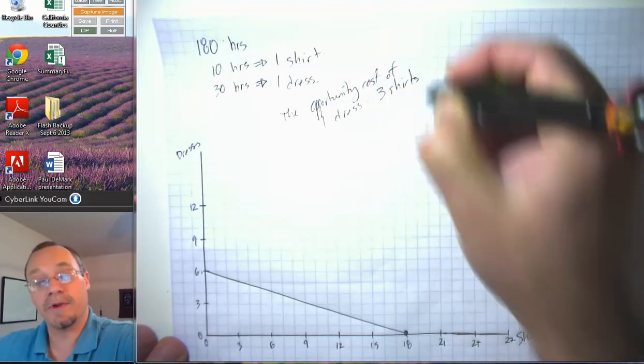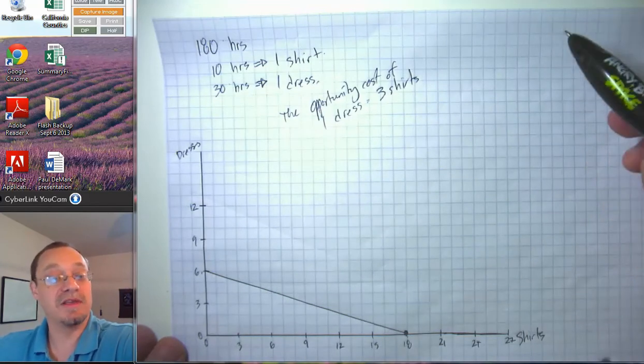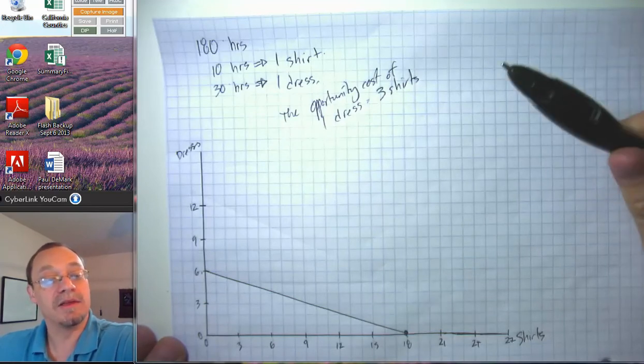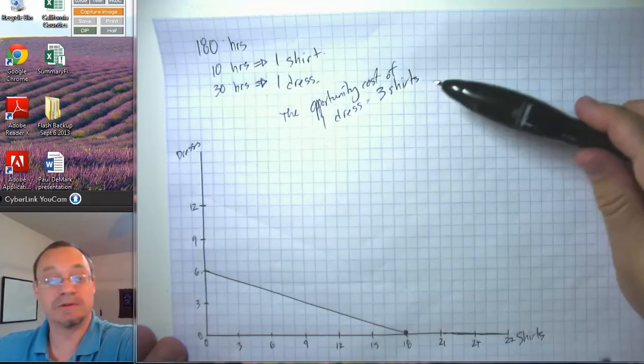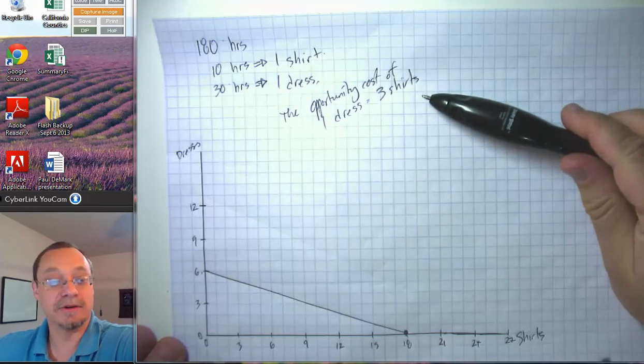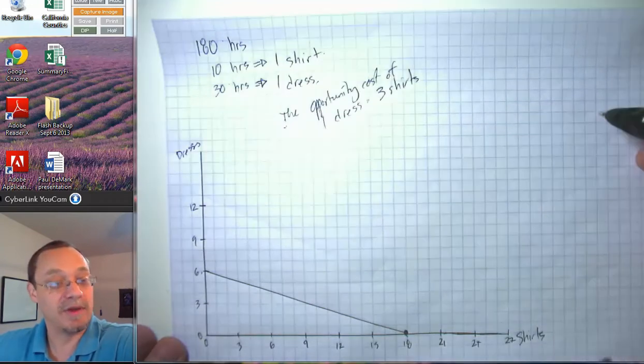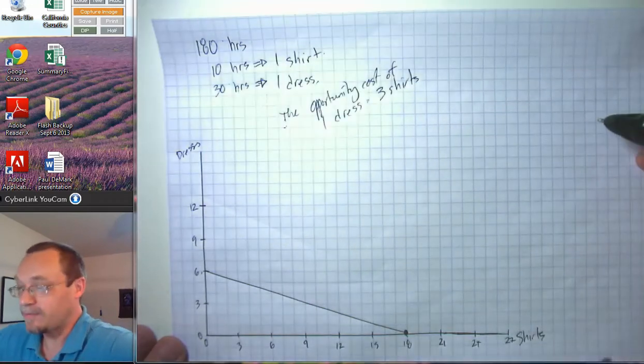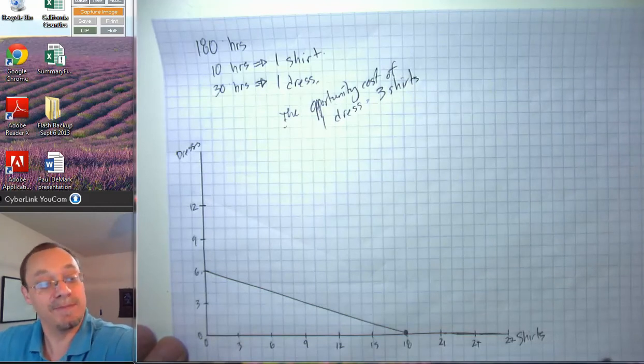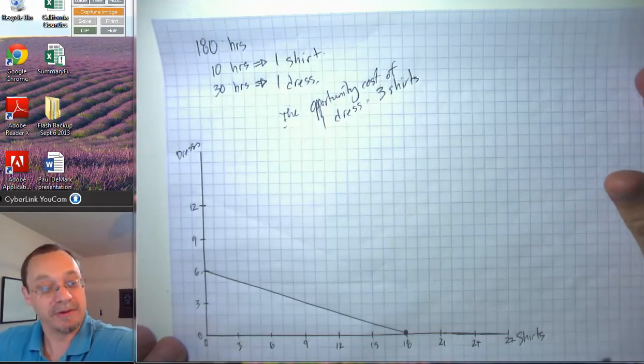So we have two different ways of thinking about what the cost of a dress is. We can think about the input cost of a dress being 30 hours. Or we can think about the cost of a dress being the alternative goods we could have gotten with those 30 hours. And generally, economists favor this as the most relevant way to think about the costs. Because time is valuable precisely because you could have been doing something else with it. Exactly how valuable your time is depends upon what else you could have been doing with that time.